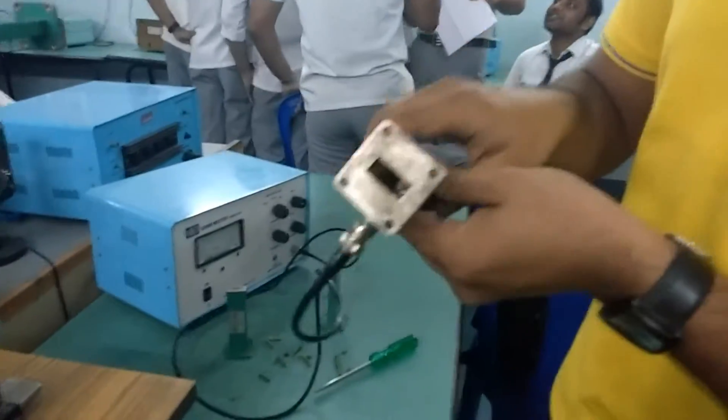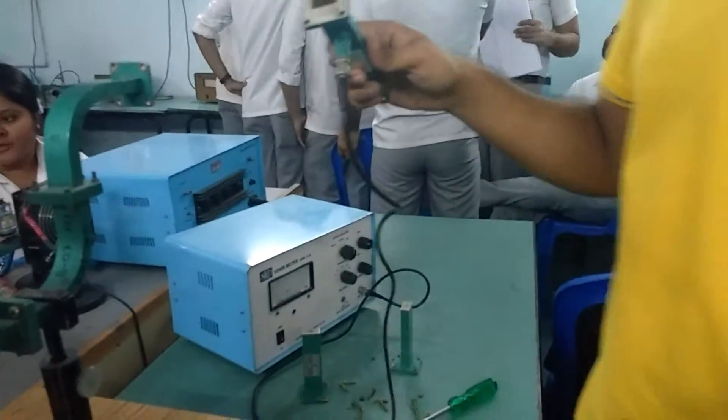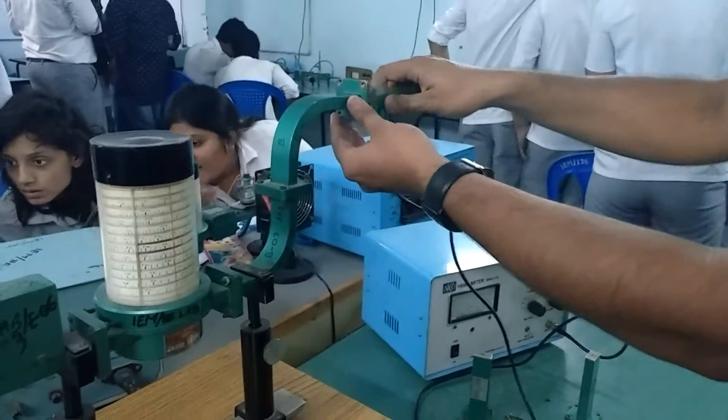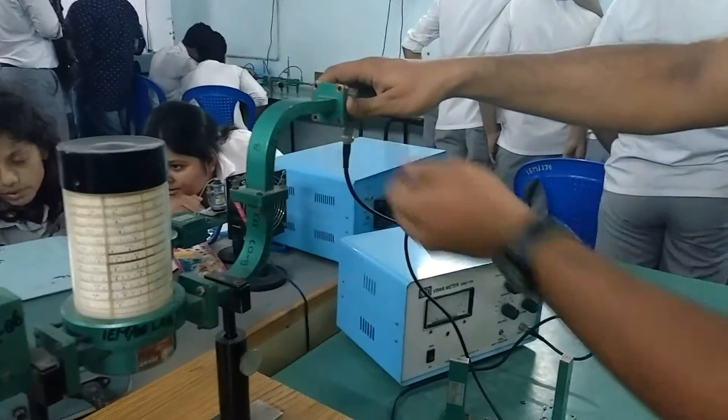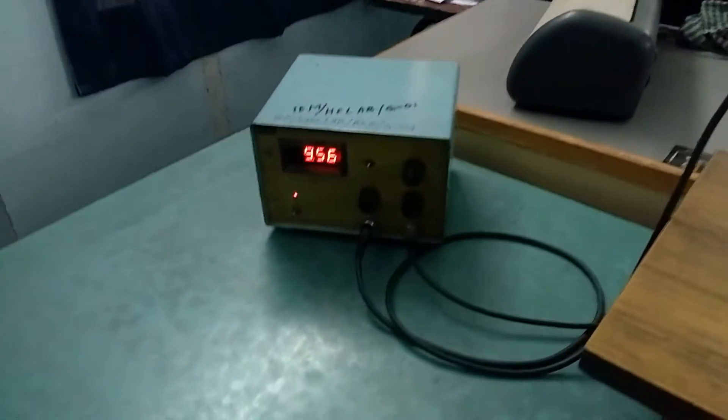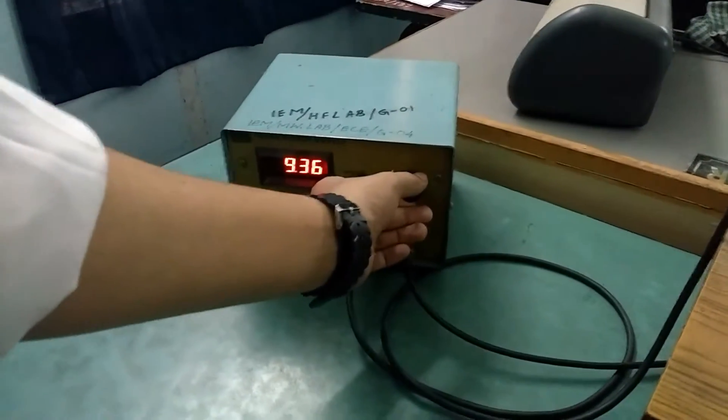This is the measuring port or the output port. Initially we have to find the input reference power actually. So we fix it here, switch it on and put the gun bias voltage at 9.5V.